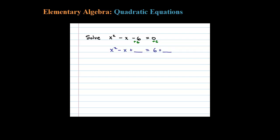Since the leading coefficient is 1, I'm going to look at the coefficient on the x term — which is negative 1. You want to take that coefficient, divide it by 2, and then square it. So negative 1/2 squared is positive 1/4.